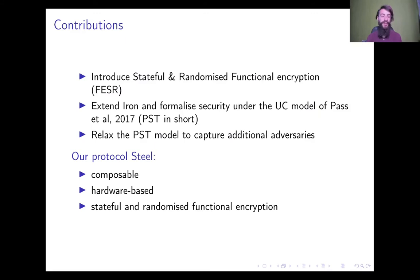Our contributions in this paper are that of generalizing functional encryption to provide additional functionalities, which include stateful and randomized functions. We also extend the Iron protocol to compute Fisch-er functions and formalize its security under the UC model of Pass et al. 2017, which we call PST. We then relax the PST model to capture additional adversaries.